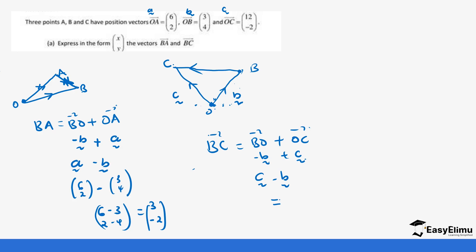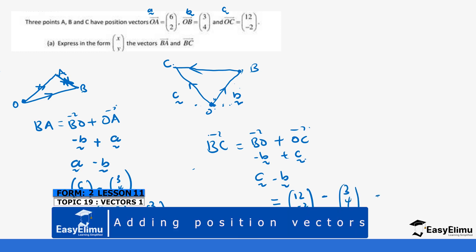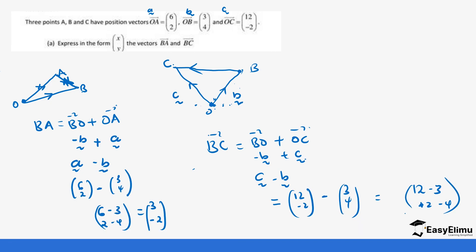So our C equals OC, which is (12, -2), and then our B is (3, 4). So this becomes 12 minus 3 and -2 minus 4. 12 minus 3 equals 9, and -2 minus 4 is -6. And that is your answer, (9, -6).